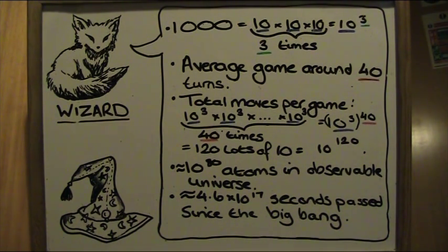Now, the number of atoms in the universe is still a massive number. So let's compare it to something so much smaller. The number of seconds which have passed since the Big Bang, since the beginning of time. There are about 14 billion years which have passed since this event. And it can be calculated to be 4.6 times ten to the power of 17. This is 46 with 16 zeros after it. And this is still so much less than the number of games of chess which can be played.